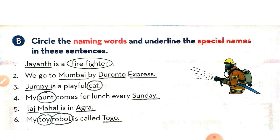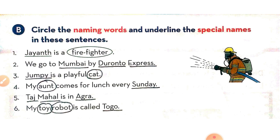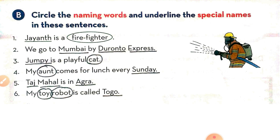Question B: Circle the naming words and underline the special names in these sentences. First sentence: 'Jayant is a firefighter.' Jayant is the specific name of a person, so we underline the word Jayant. Firefighter is a naming word. Second sentence: 'We go to Mumbai by Duronto Express.' Mumbai is a special name, and Duronto Express is also a special name.